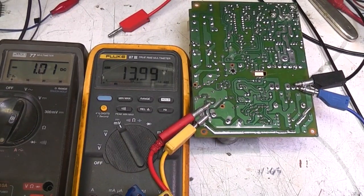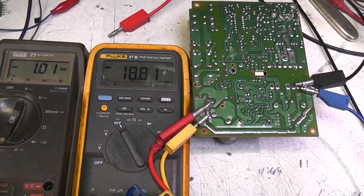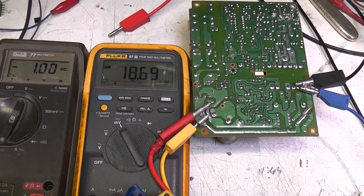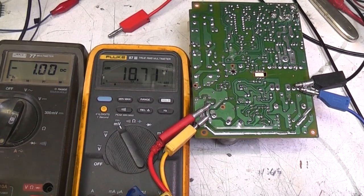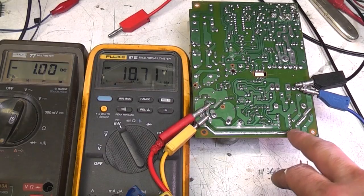I'm going to pass one amp through this track and measure the voltage in millivolts, which will give our result in milliohms. You can see this track with the solder on it is about 18.7 milliohms.